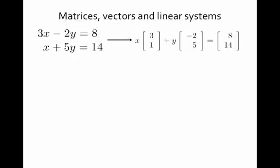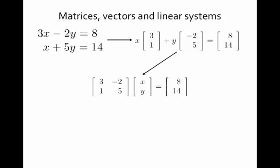That single equation involving vectors and weights can again be recast as a matrix times a vector, because I'm forming a linear combination of two columns using a couple of weights. So I can reformat any linear system as a single equation involving matrices and vectors multiplied together.